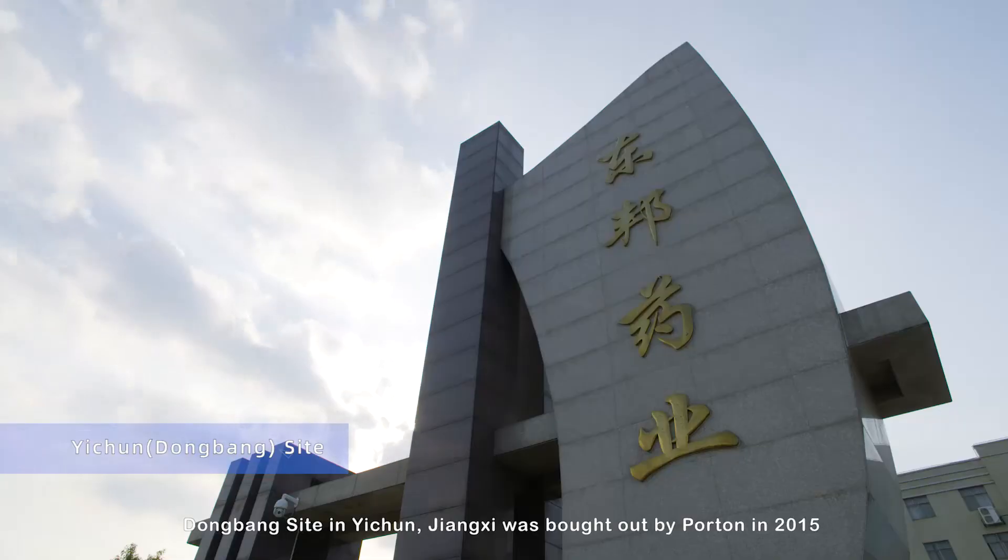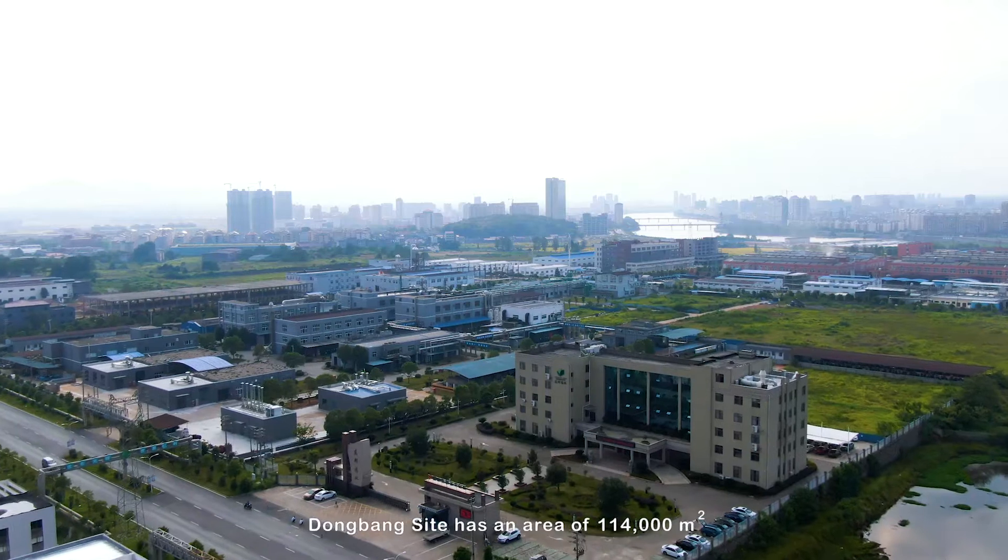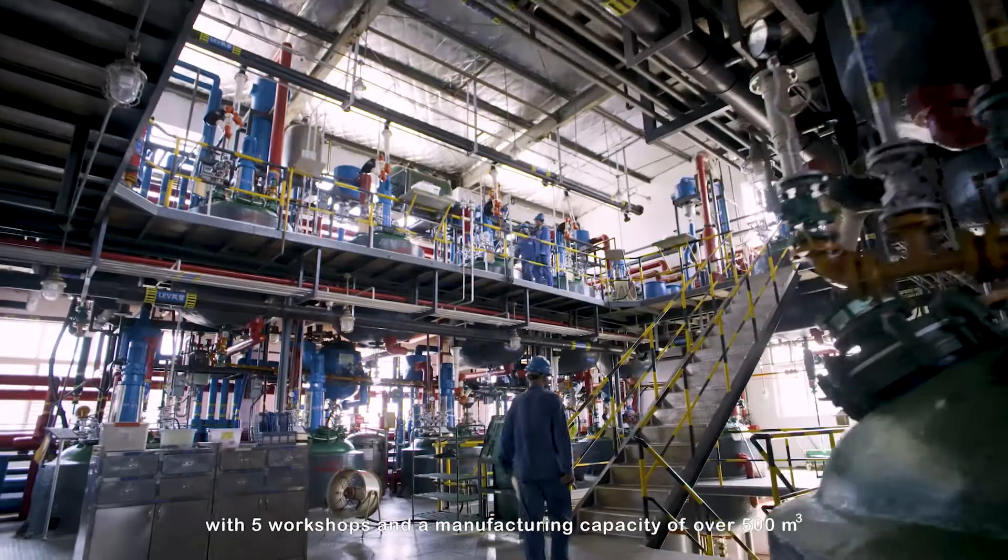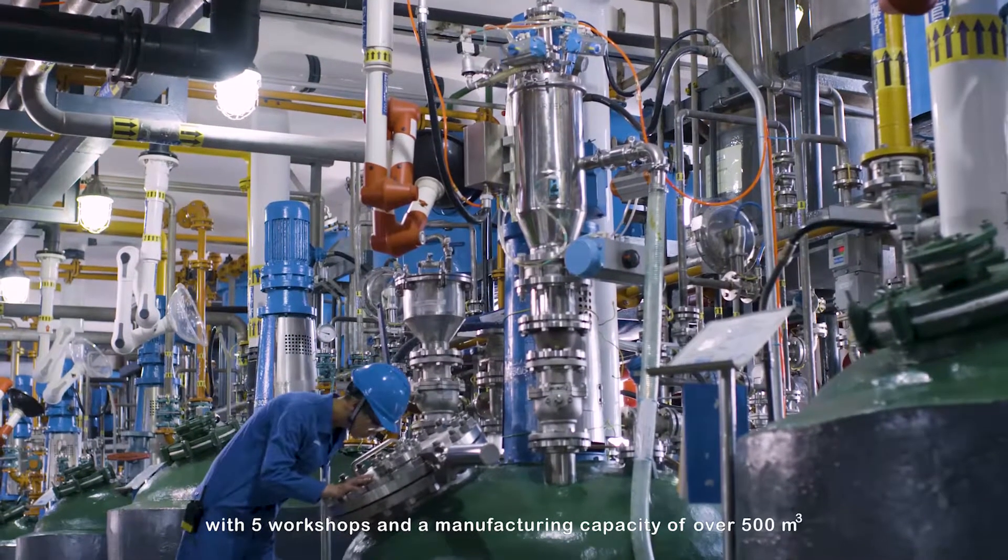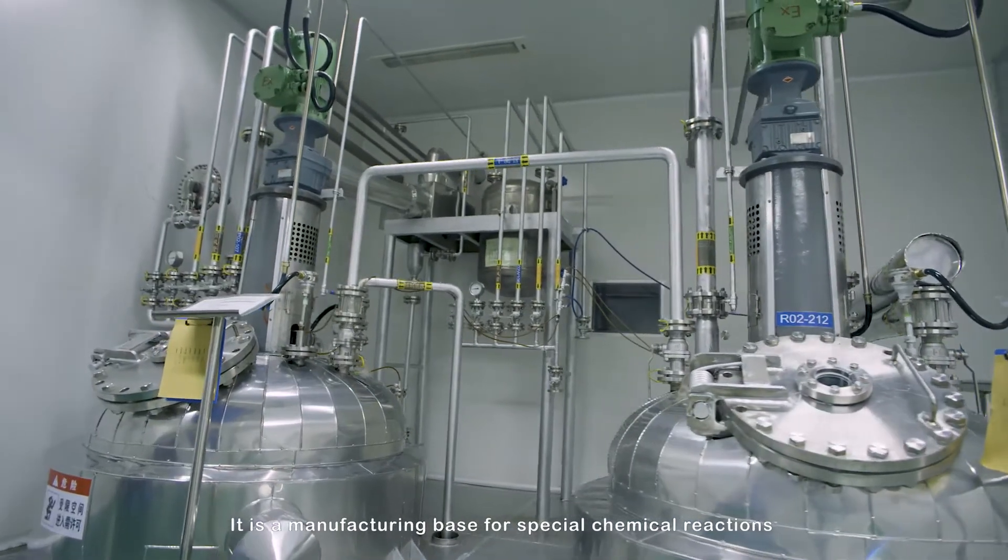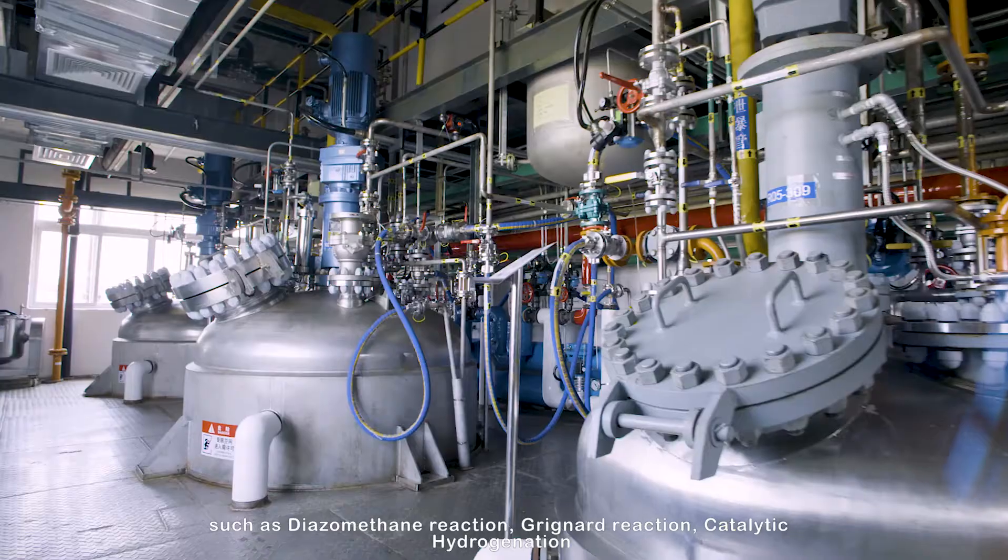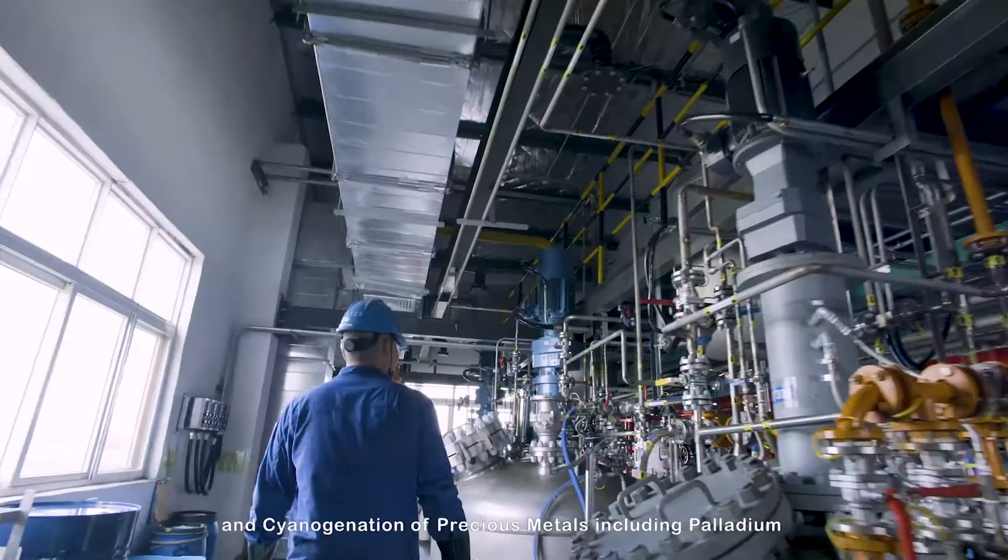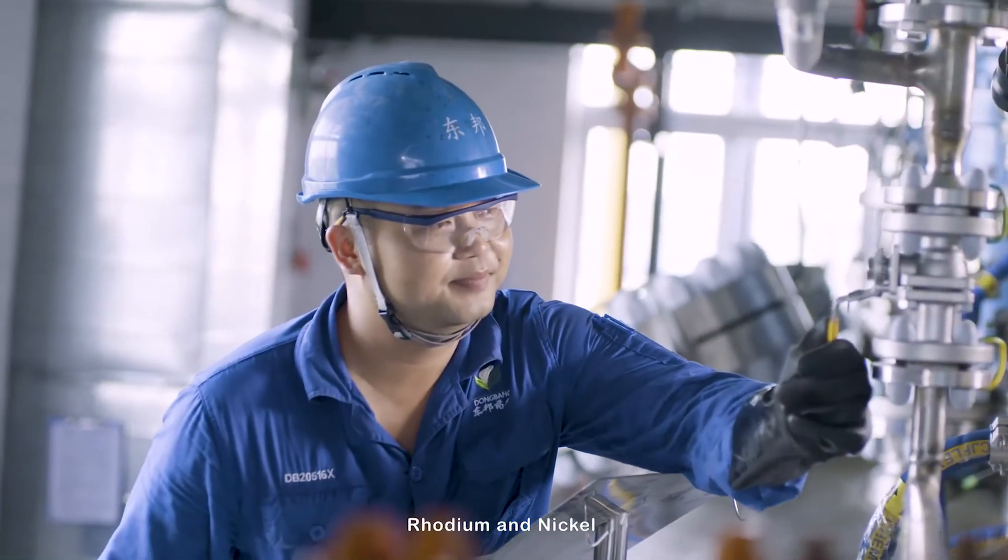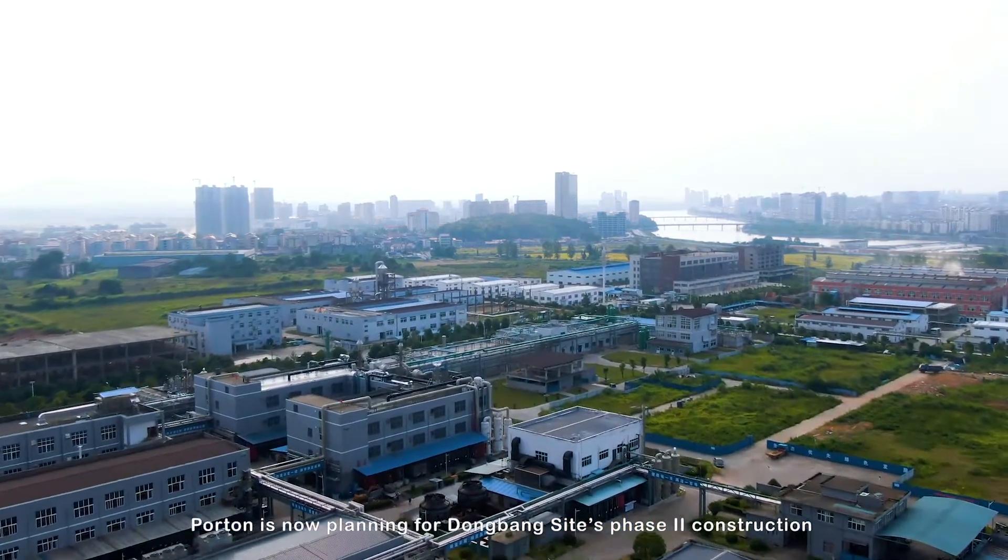Dongbang site in Yichun, Jiangxi was bought out by Porton in 2015. Dongbang site has an area of 114,000 square meters with 5 workshops and a manufacturing capacity of over 500 cubic meters. It is a manufacturing base for special chemical reactions, such as diazomethane reaction, Grignard reaction, catalytic hydrogenation and cyanogenation of precious metals including palladium, rhodium, and nickel. Porton is now planning for Dongbang site's Phase II construction.